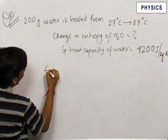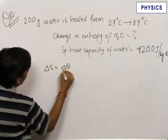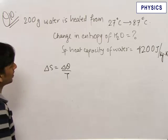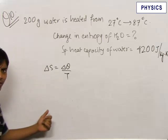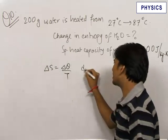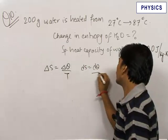For this we know that delta S is equal to delta Q upon T. In this question the temperature is not constant, therefore we now know that we have to integrate. So we write dS is equal to dQ upon T.